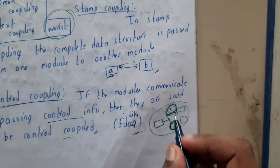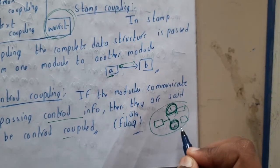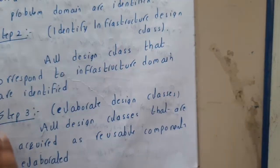Here we are transferring some control - that is nothing but a single flag we are sending. Based on that flag, one is executed and one is not executed. That is control coupling.